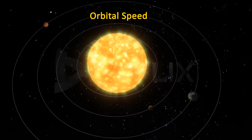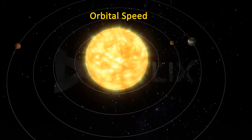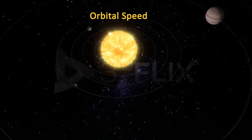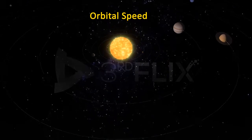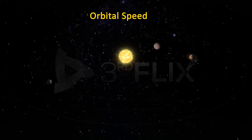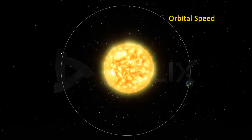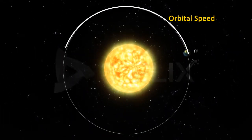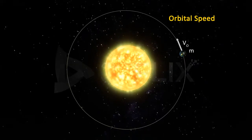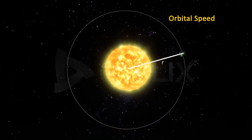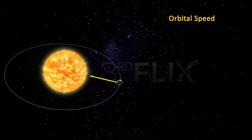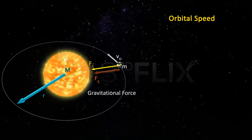Orbital speed: the speed of any astronomical object in its orbit is known as its orbital speed. All planets in the solar system do not have the same orbital speed. We will now examine the factors which affect the orbital speed of a planet. Consider a planet of mass m revolving with orbital speed v-naught around the Sun in a circular orbit of radius r.